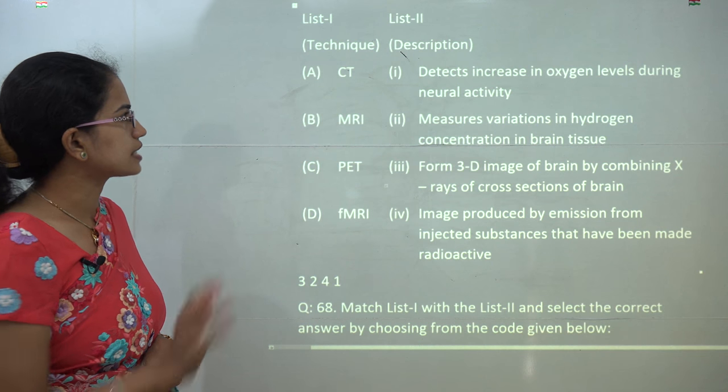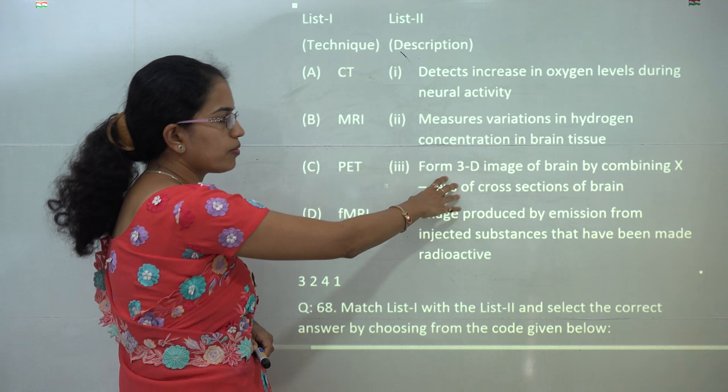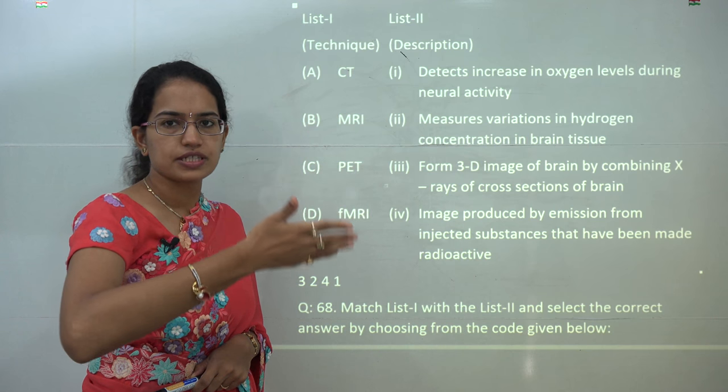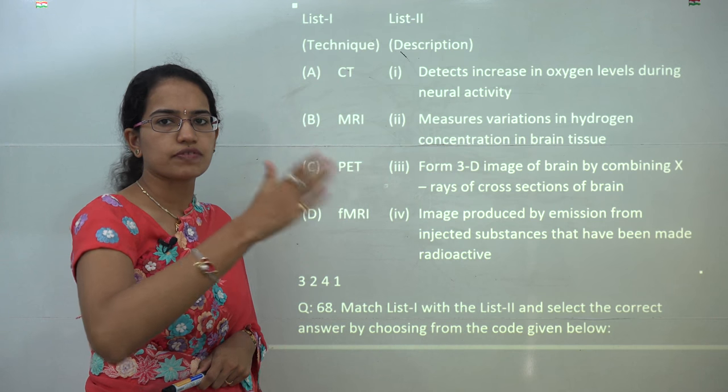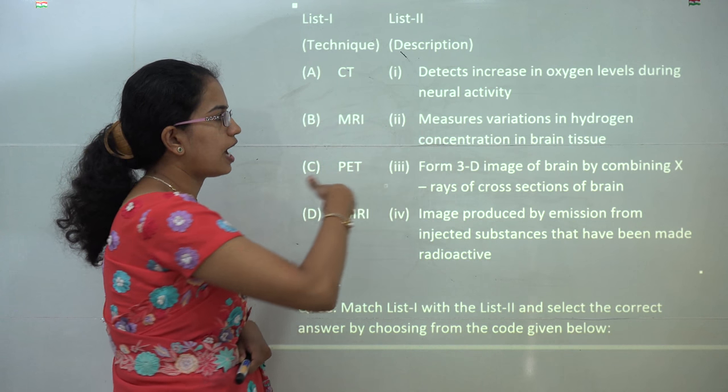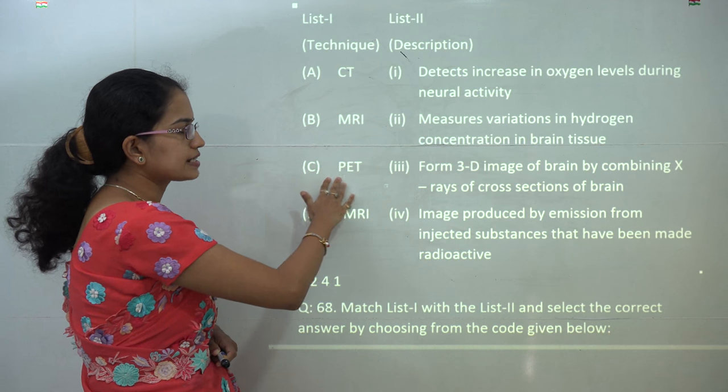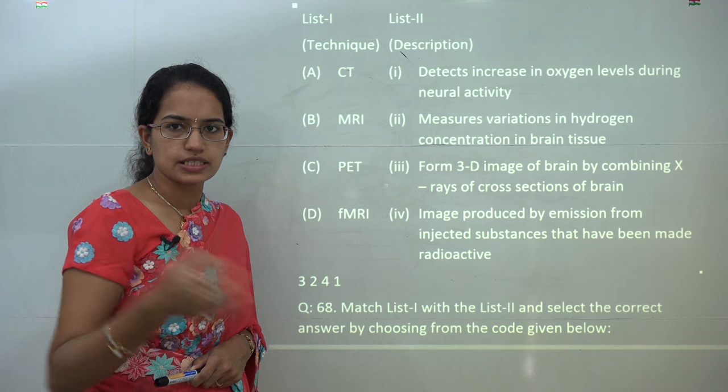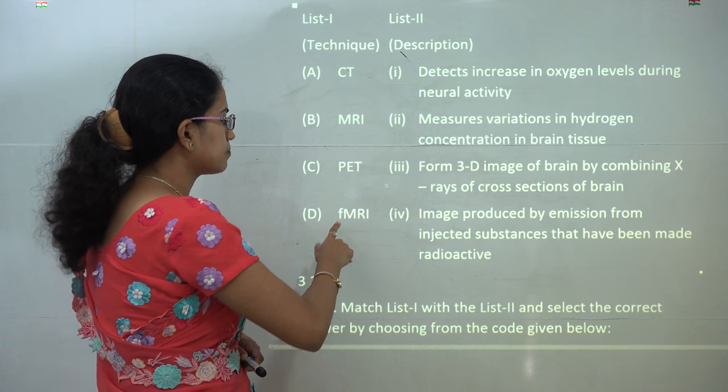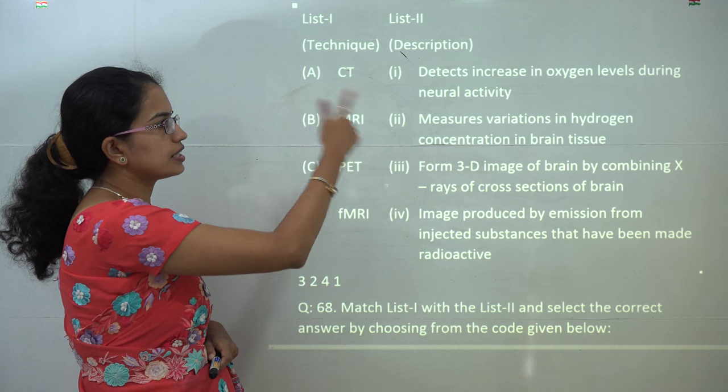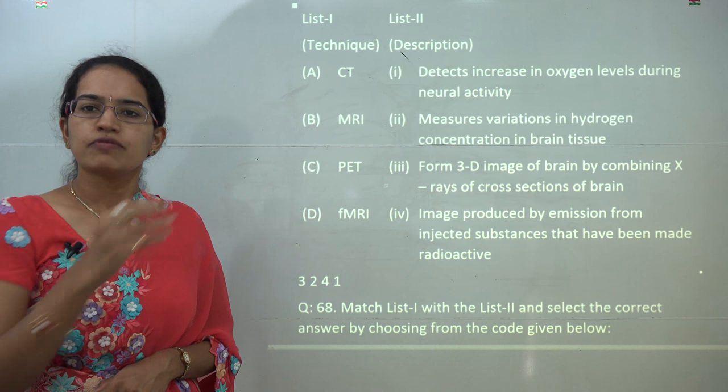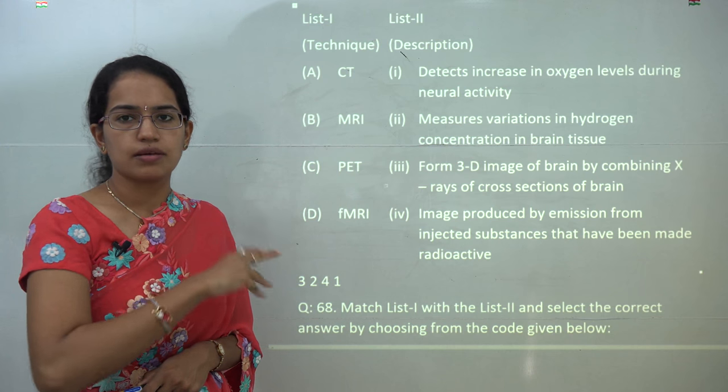You have to match the techniques with the description. So CT scan is a form of 3D image of the brain that combines with the x-ray along different sections. So you have cross sections of x-ray in various ways and you have the CT scan. Then you have the MRI; it measures the variation in the hydrogen concentration. The PET scan talks about a subject which is injected into the blood and which is radioactive, and then finally you have the imaging that is done. And functional MRI talks about the increase in the oxygen level during the neural activities. So those are the correct matches. We have covered a detailed class on the various methods, so just refer that.